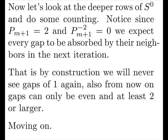Now let's look at deeper rows and do some counting. Notice, since our next prime is equal to 2, and it subtracts 2 is 0, we expect from CKM to absorb everything. That is, by construction, we'll never see gaps of 1 again. So from now on, gaps can only be even, and at least 2 or larger.